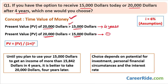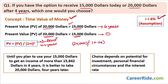To find that, we use the formula for present value of money. PV (present value) equals FV (future value) divided by (1 + i) to the power N, where i is the rate of interest and N is the number of years. Based on the present situation, I have assumed the rate of interest to be 6%. So the calculation is: 20,000 divided by (1 + 0.06) to the power 4, because 4 is the number of years.